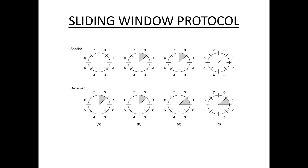For example, the sender sends frame one and frame two before getting the acknowledgement for frame one. That is the use of sliding window protocol. In the previous stop-and-wait protocol, the sender sends only one frame at a time, whereas in sliding window protocol the sender sends multiple frames at a time. That is the difference between these two protocols.